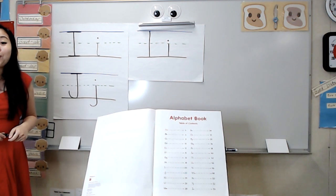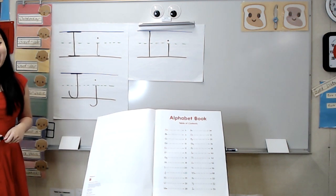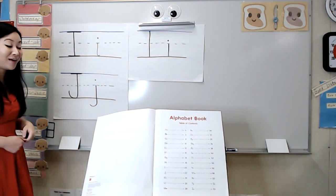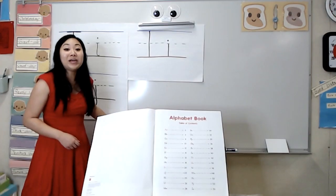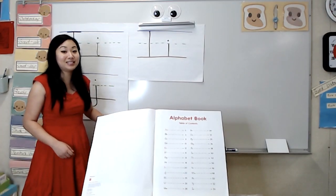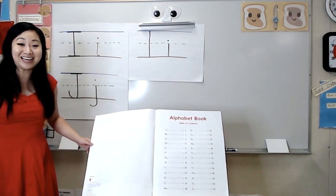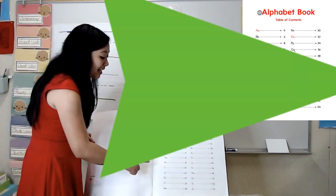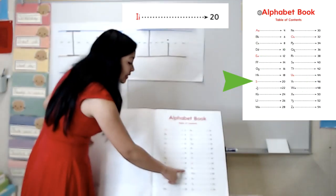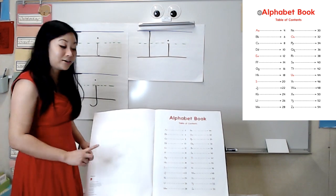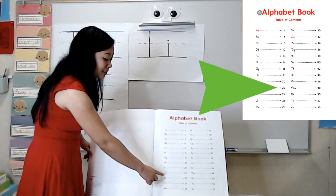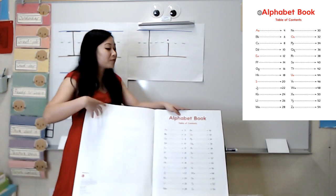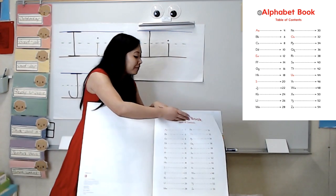Now that we know a little bit more about the letters I and J, let's read some poems about them. And remember, we can check the table of contents to see where we can find them. I see the letter I is going to be on page 20 and the letter J is going to be on page 22. Let's look at our poem for the letter I first.